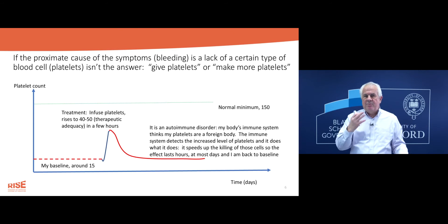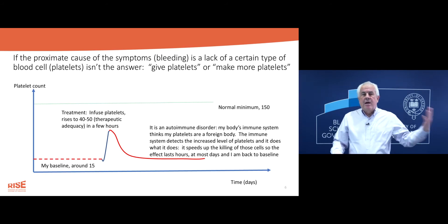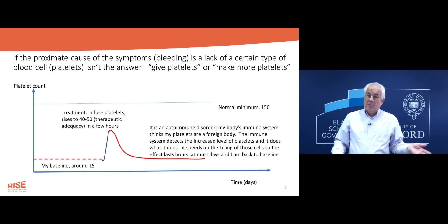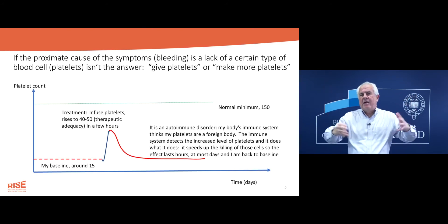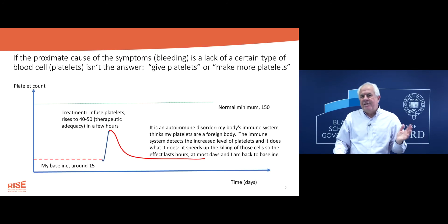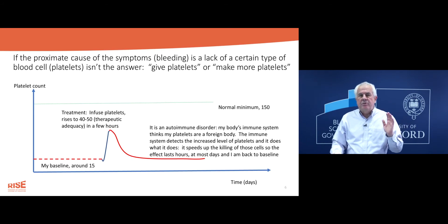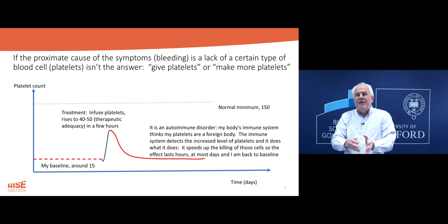What an autoimmune disorder means is my immune system, which protects your health from foreign agents, has come to believe that my own platelets are a foreign body. So if you infuse my body with platelets, my immune system detects the presence of a foreign body and says, 'There's more platelets — we need to kill them faster.' So the time that infusing platelets works for me ranges from hours to days. It's just not feasible to take a proximate approach to augmenting what is clearly missing without taking into account the broader systemic reactions to the treatment.